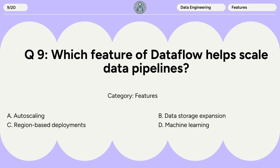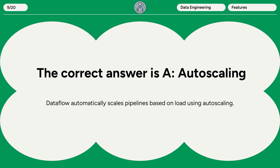Question 9: Which feature of Dataflow helps scale data pipelines? A. Autoscaling. B. Data storage expansion. C. Region-based deployments. D. Machine learning. The correct answer is A. Autoscaling. Dataflow automatically scales pipelines based on load using autoscaling.